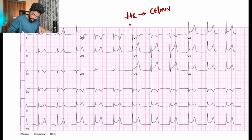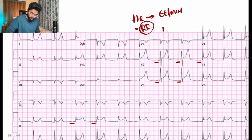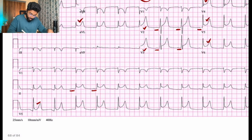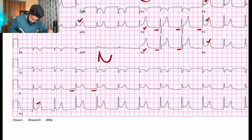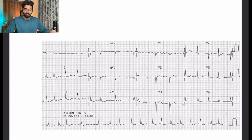In this ECG, heart rate appears almost normal, regular rhythm, P waves and PR interval are almost normal, and there is concavity of the ST segment — one possibility for this diagnosis is pericarditis. We'll now move on to discuss arrhythmias.